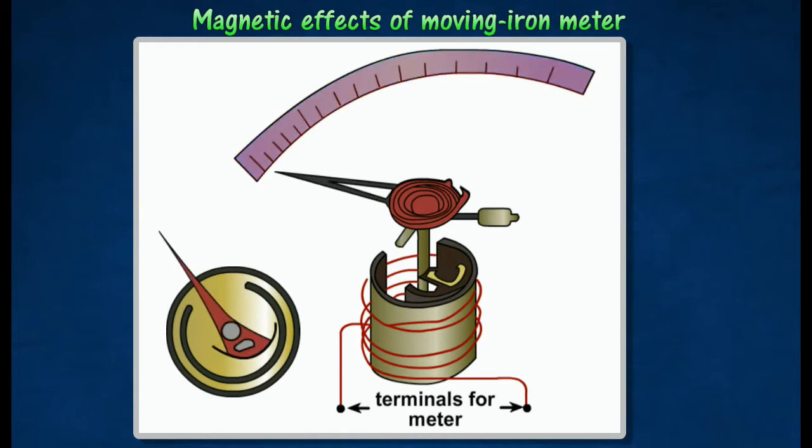The scale of moving iron meter is non-linear, that is the scale is not evenly divided. This is because the force of repulsion between the irons is not directly proportional to the current flowing through the coil.